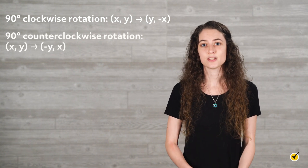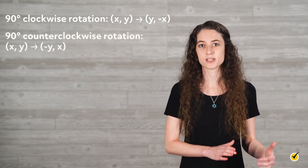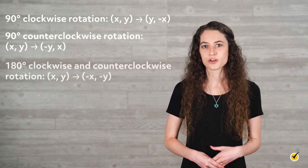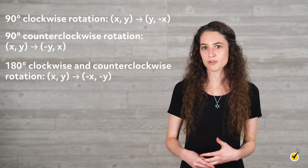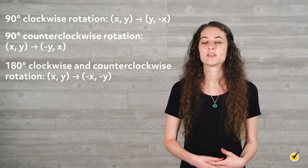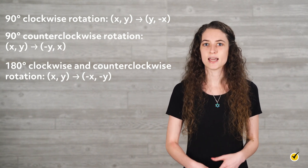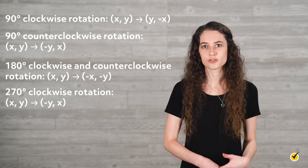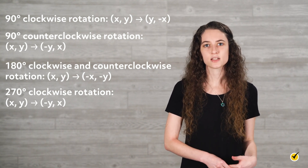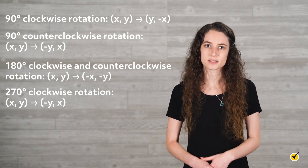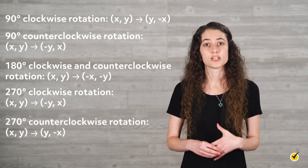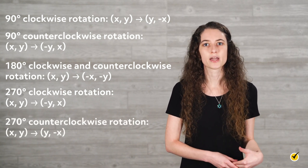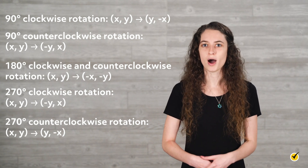If you want to rotate 90 degrees counterclockwise, you take the points (x, y) and they become (-y, x). If you want to rotate 180 degrees clockwise or counterclockwise, then you take (x, y) and it becomes (-x, -y). If you want to rotate 270 degrees clockwise, take the point (x, y) and make it (-y, x). And if you want to rotate it 270 degrees counterclockwise, take the point (x, y) and change it to (y, -x).